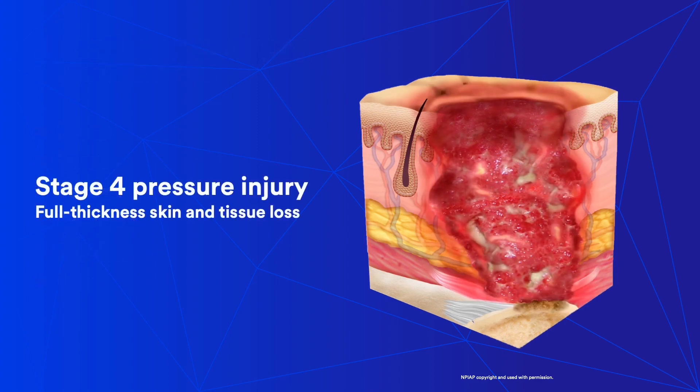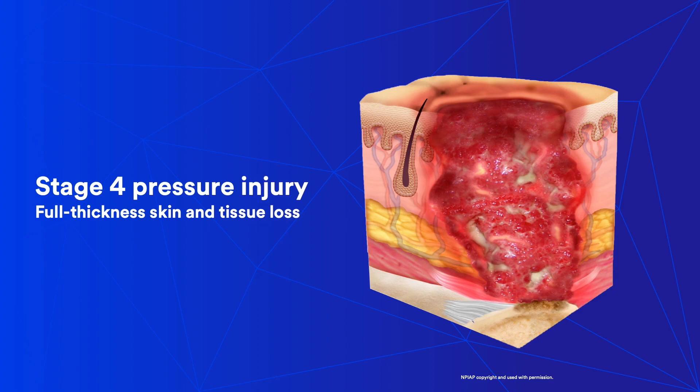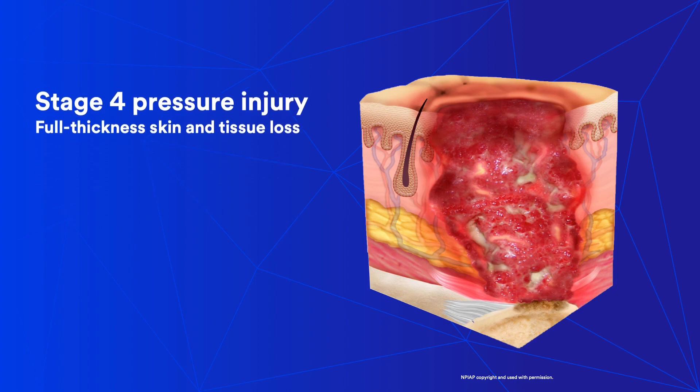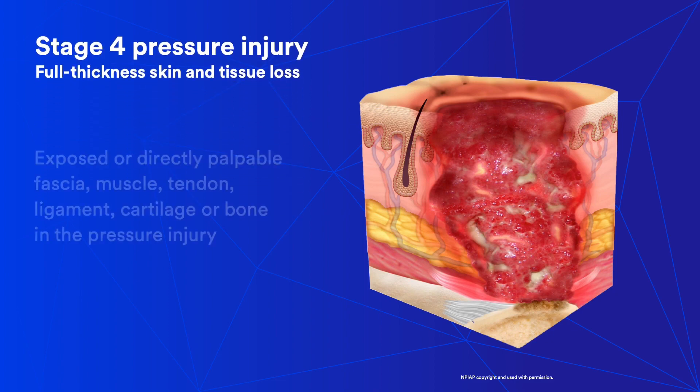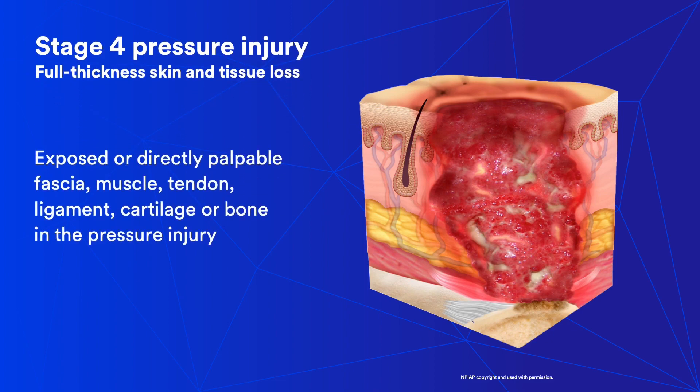The cross-section shows a deeper red wound with whitish streaks that goes from the skin through the dermis and adipose layer, down to the muscle tissue. Stage 4 pressure injuries are described as full thickness skin loss, with tissue loss and exposed or palpable fascia, muscle, tendon, ligament, cartilage, or bone present.